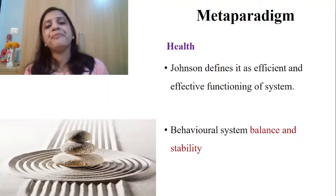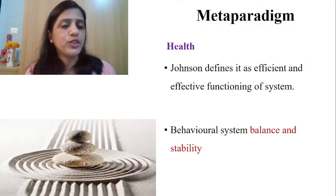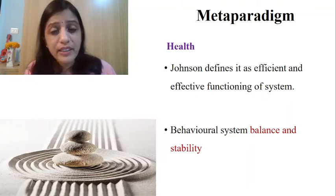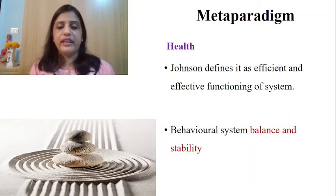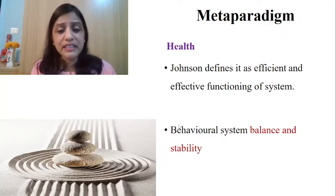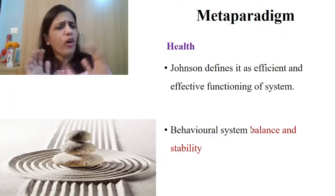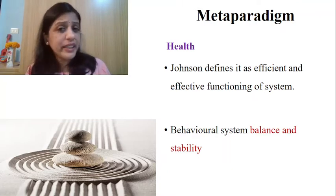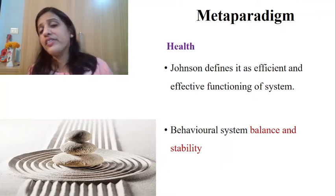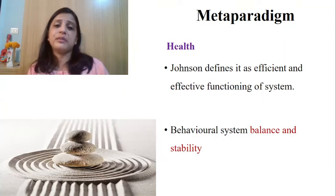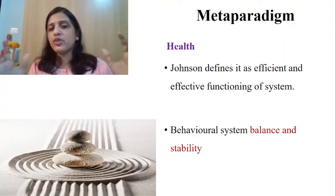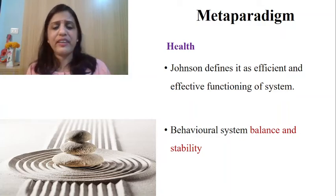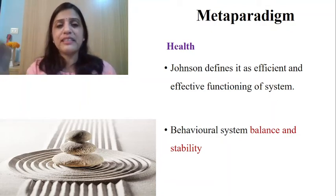So according to Johnson, environment is of two types: external — any object, person, or phenomenon which can affect the behavioral subsystems — and internal — variables like physiology, ego, or psychological problems which can affect the subsystems from within. A person is considered healthy according to Johnson if there is balance and stability in the behavioral system — if all eight subsystems are working well with good interdependency and effective functioning.